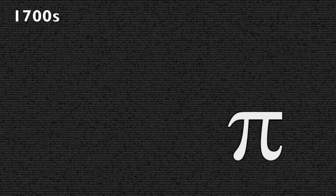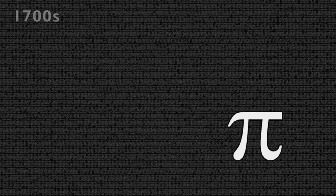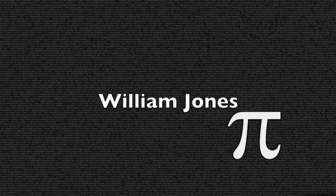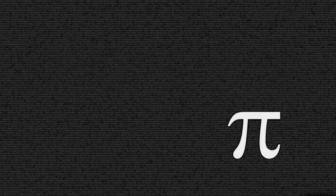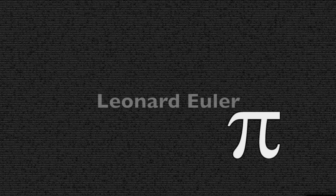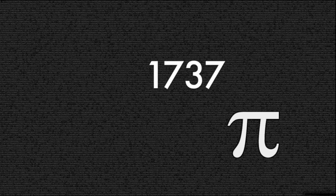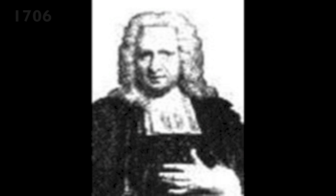In the 1700s, the Greek letter was adopted as the symbol for Pi. It was introduced by William Jones but was further popularized by Leonard Euler, who started to use the symbol in 1737.